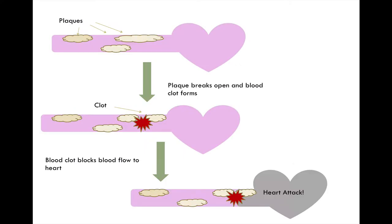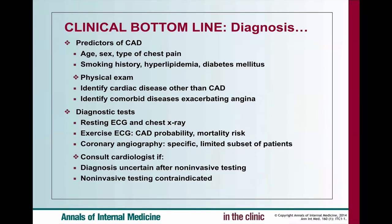Coronary artery disease. When counseling patients, they may ask you what a heart attack — otherwise known as an MI — is. It happens when one or more coronary arteries supplying the heart become blocked. Coronary arteries supply the heart with blood, oxygen, and nutrients. When that artery is blocked, that area of the heart becomes damaged and the tissue may die.